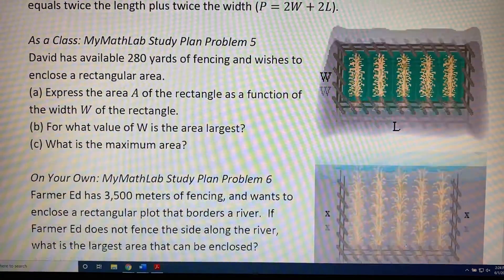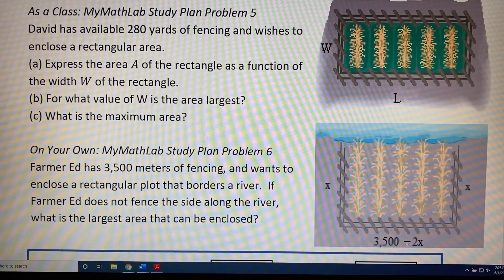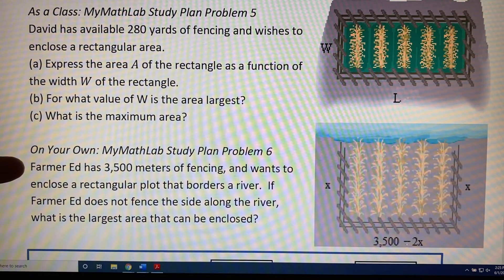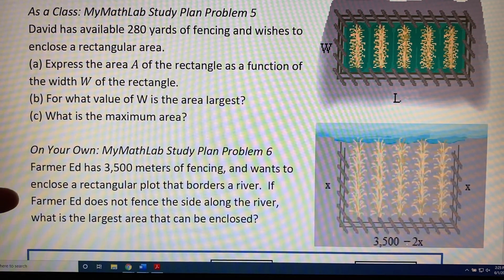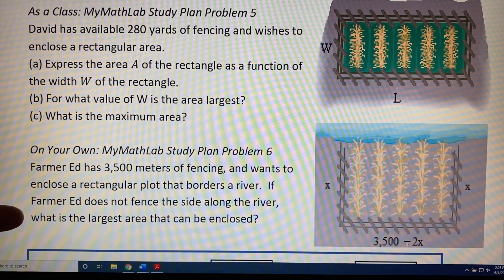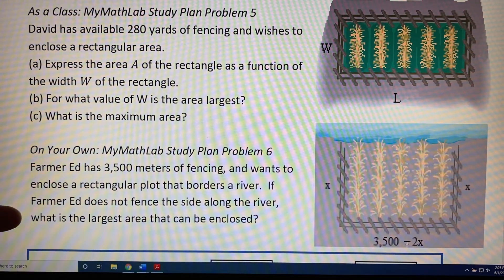Our second problem is similar. Farmer Ed has 3,500 meters of fencing and wants to enclose a rectangular plot that borders a river. If Farmer Ed does not fence the side along the river, what is the largest area that can be enclosed?